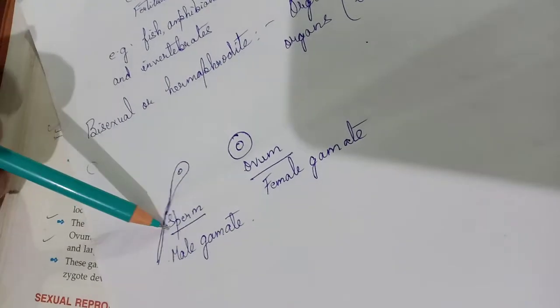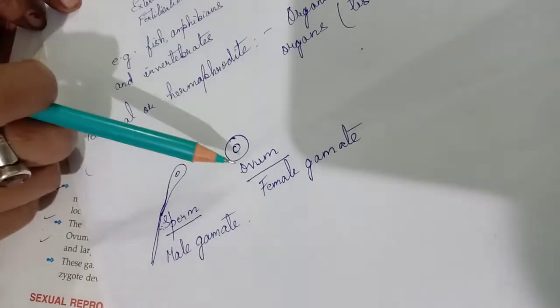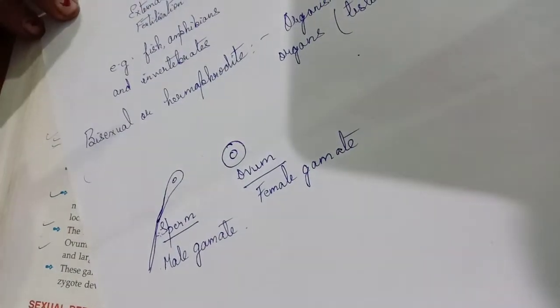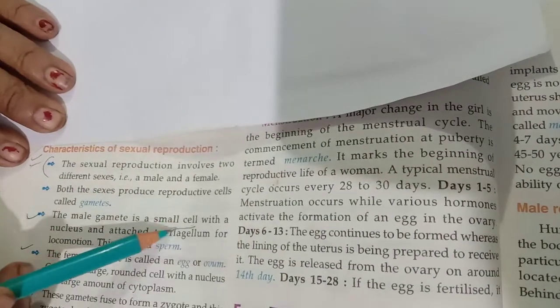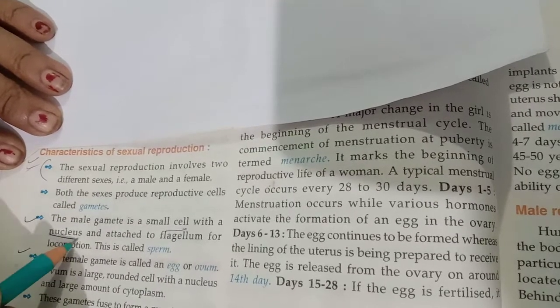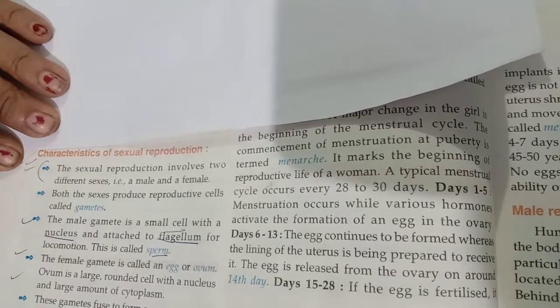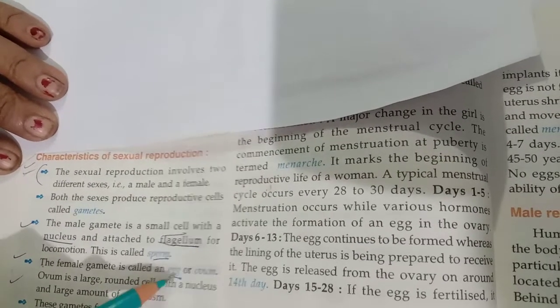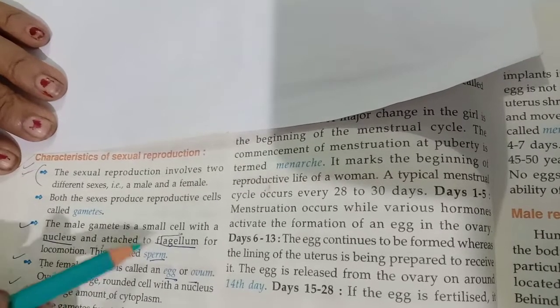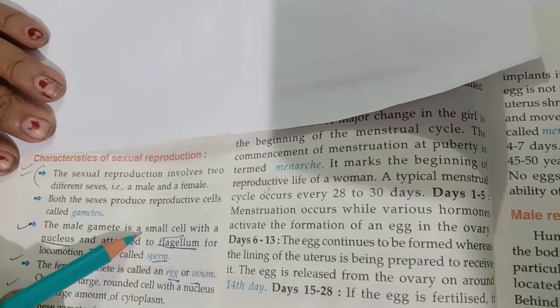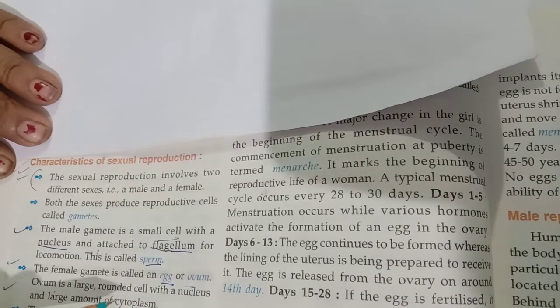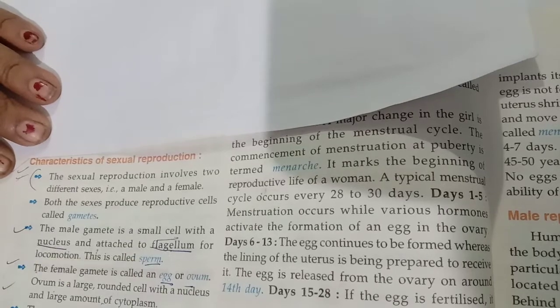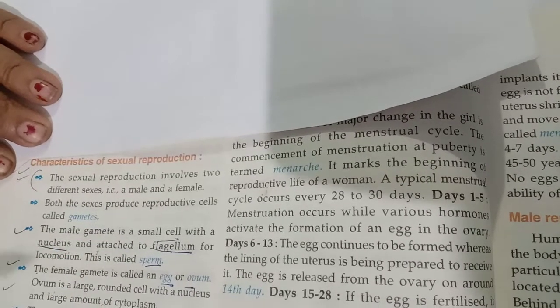When testes produce sperm or ovum, they function as exocrine glands. When they produce the hormone testosterone, they are endocrine glands. The ovaries, when they produce the hormones progesterone and estrogen, act as endocrine glands. The structural differences: sperm is a small cell with a flagellum or tail; ovum is a large rounded cell with no flagellum or tail. Both have cytoplasm.